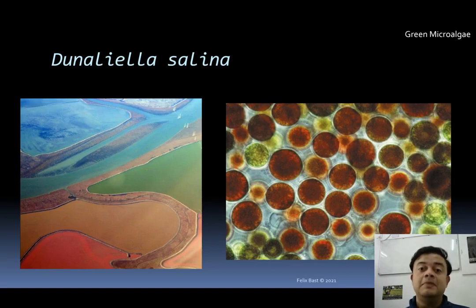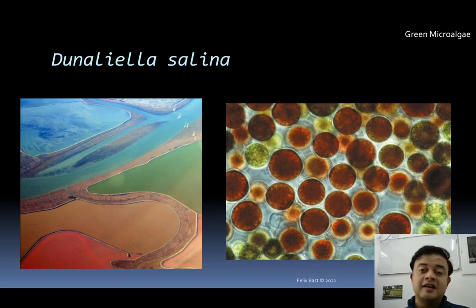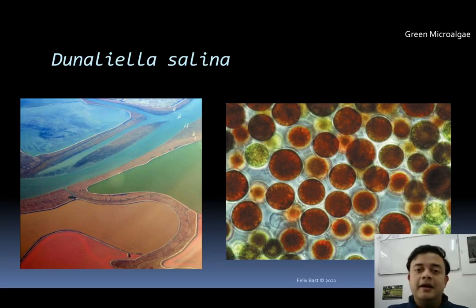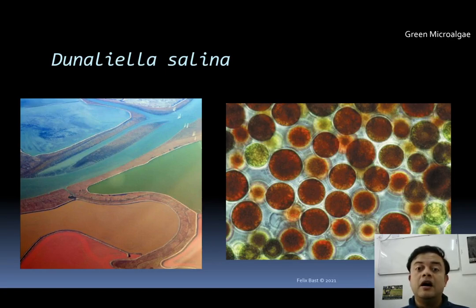Beta carotene is an antioxidant, and there are several evidence-based reports that consuming a diet rich in beta carotene significantly lowers the chances of developing cancer. I worked on Dunaliella salina during my first year of my master's at the National Centre for Biological Sciences, TIFR, in Bangalore, working with Professor MK Mathew on its membrane biophysics — that is actually how I started working on algae for the rest of my career. Dunaliella salina can be cultivated indoors but requires a very high salt level, as it is an extreme halophyte — and such extreme halophilic algae are quite rare, as extremophiles are usually prokaryotes, not eukaryotes. Dunaliella salina is a green microalgae, a eukaryotic chlorophyte.